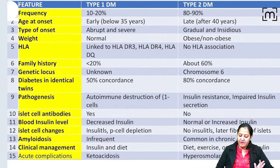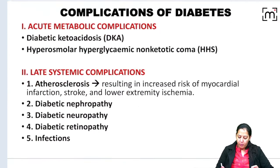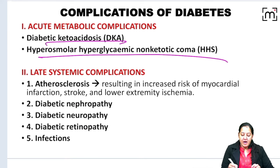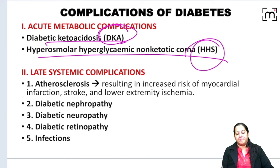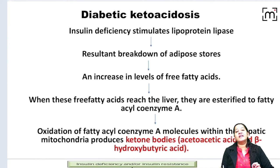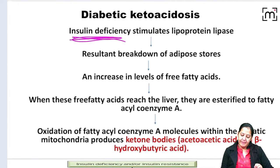Please read the comparison table for Type 1 and Type 2 diabetes. Regarding complications, the two important ones are diabetic ketoacidosis (DKA) and hyperosmolar coma.